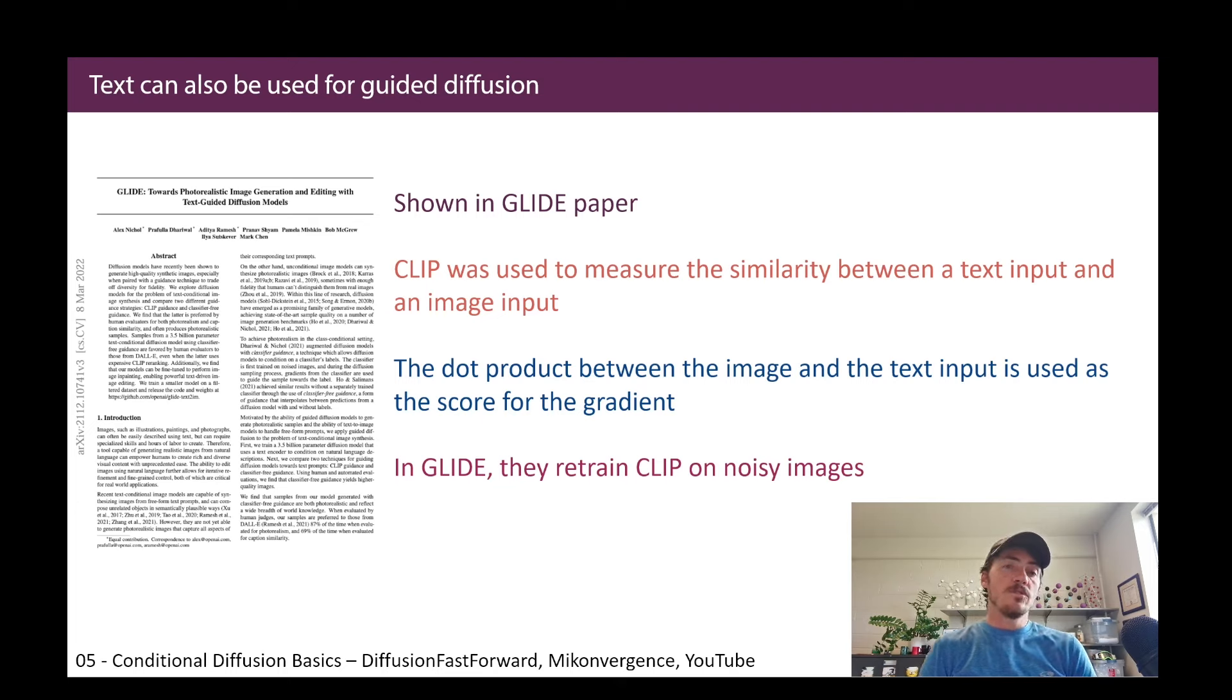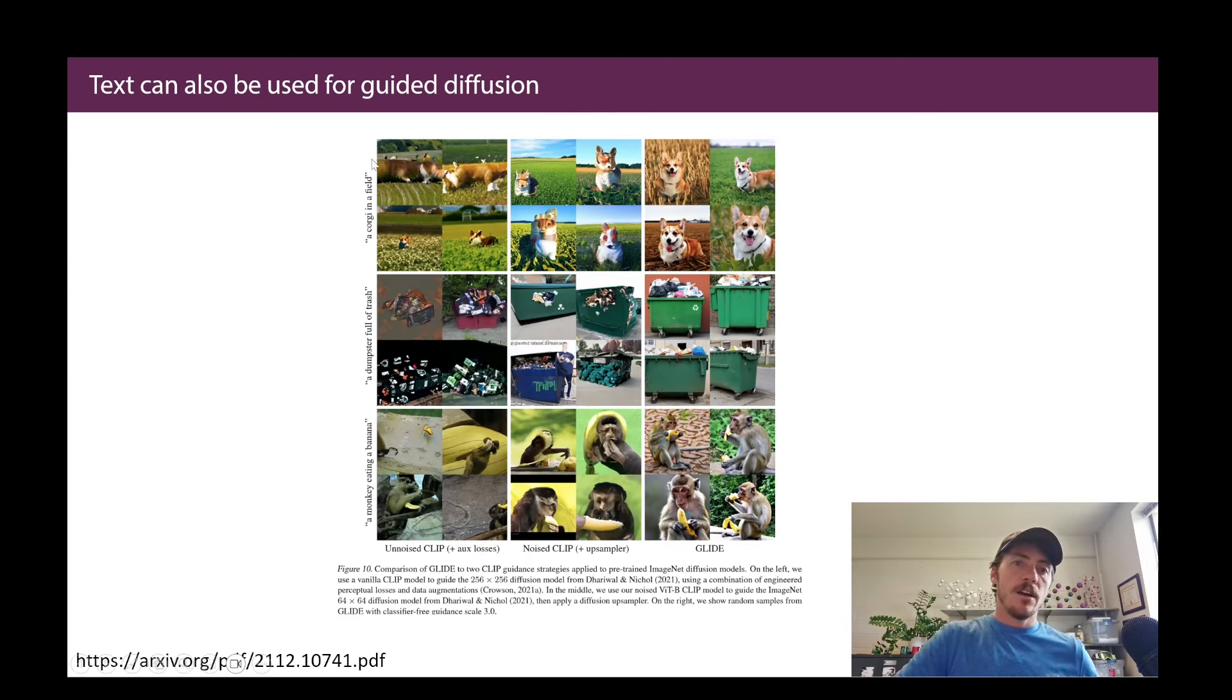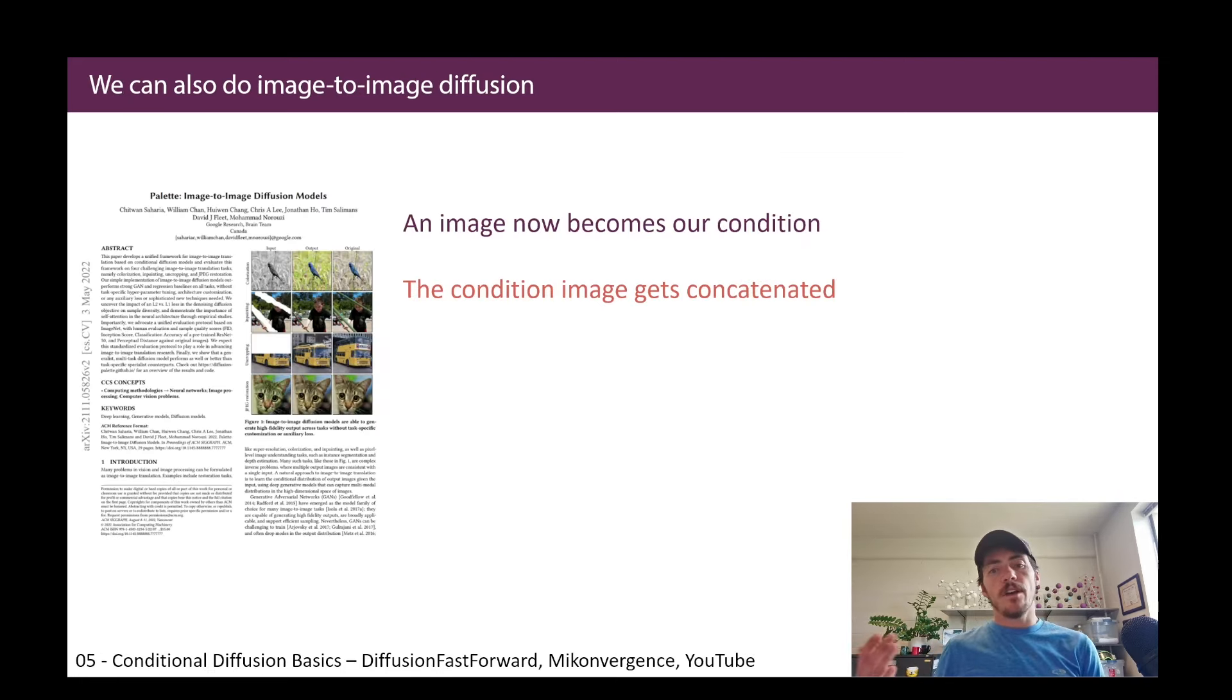There's other ways that you could do this guided diffusion process. So you could use text, for example, and this was shown in the glide paper. Essentially here, what they're doing is they're using CLIP as a measure of similarity between a text input and an image input. So this is a pre-trained network where they had images and text descriptions of them. Then they take the dot product between the image and the text, and this is used as the score for the gradient. And then in glide, they retrain CLIP on noisy images. So you can see the example of this. On the Y label here, you see, a corgi in a field, and then you've got three different models performing here. You've got corgis using unnoised CLIP. You've got it with noise CLIP. And then the final one using the glide approach, where the big difference there is this classifier-free guidance. And you can see that the original ones are not great, and it's getting better and better with this additional classifier-free guidance.